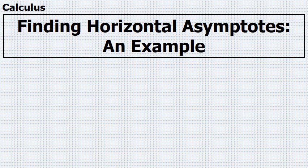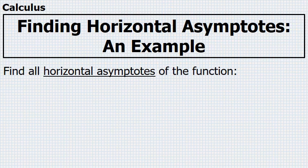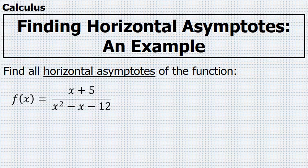In this example, we'll discuss the process used to find horizontal asymptotes. The directions are asking us to find all horizontal asymptotes of the function f(x) equals x plus 5 over x squared minus x minus 12.